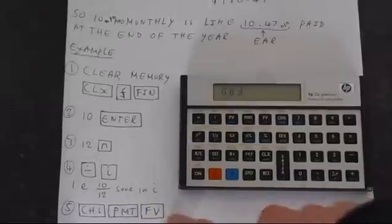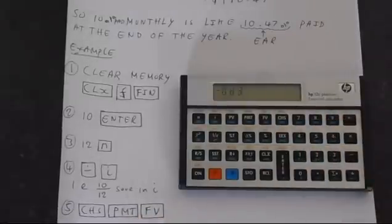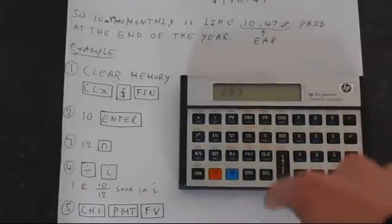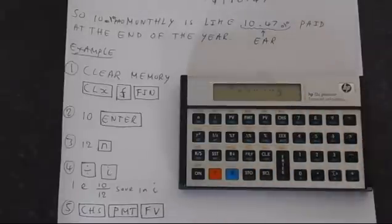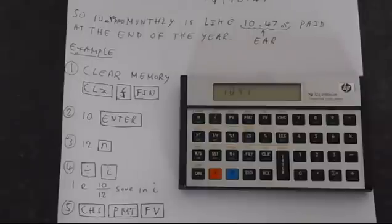Now to finish the calculation, we've got to change the sign because of the conventions. We'll put this into payment, and then if we press FV, we're going to get 10.47, which is exactly as we expected.